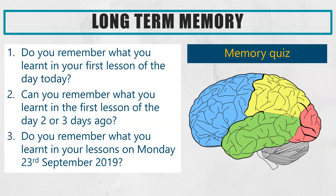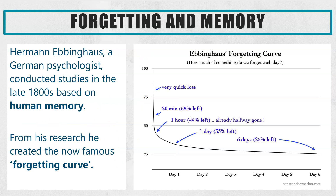The most common answers are yes, yes, and no — and there is a scientific reason behind this. That's what I'm going to be going through in this video: why it's easy to remember things in the short term but not always easy to remember information in the long term, and I'll be showing you the tricks of how to make sure you can. This all links to Herman Ebbinghaus's theory on forgetting and the forgetting curve.